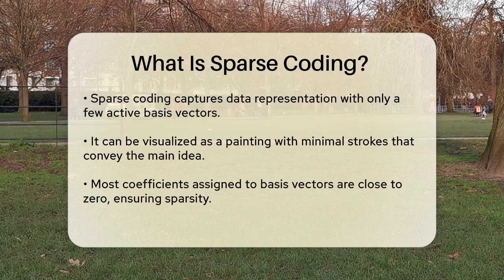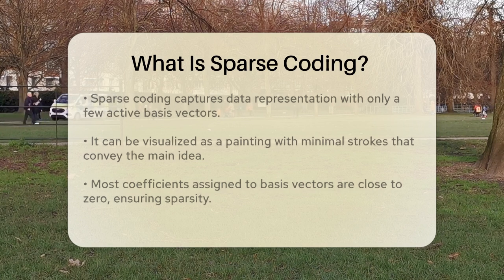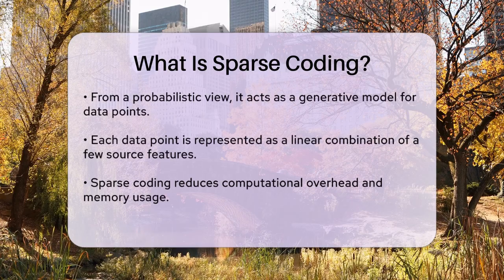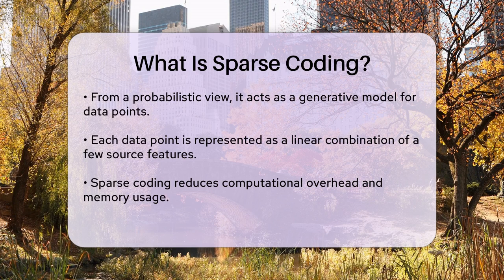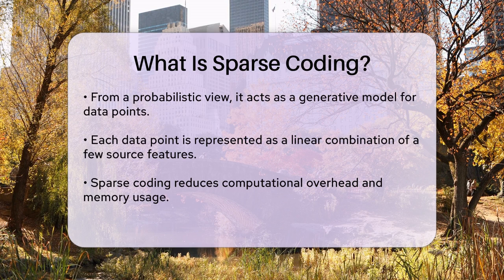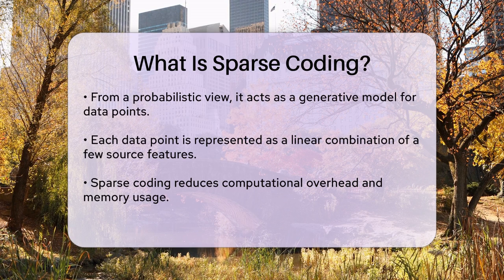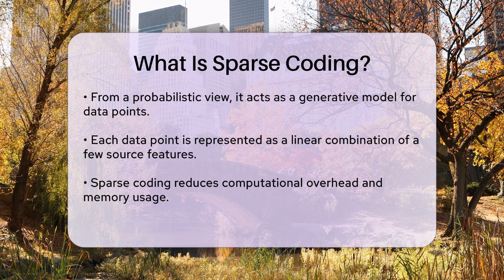From a probabilistic perspective, sparse coding can be seen as a generative model where each data point is represented as a linear combination of a small number of source features. This approach assumes that any single data point, like an image, is likely to be the product of relatively few source features, making the representation sparse and efficient.